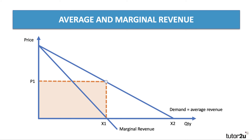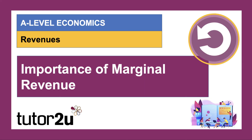Let me shade it for you — there we go. That is the highest revenue the firm can get. If they lowered the price below P1, the marginal revenue would be negative. And in fact, cutting the price below P1 would bring down total revenue. So that's the way to draw the average and marginal revenue curves. You won't be asked to prove it in the exam, but it's important to draw accurate diagrams.